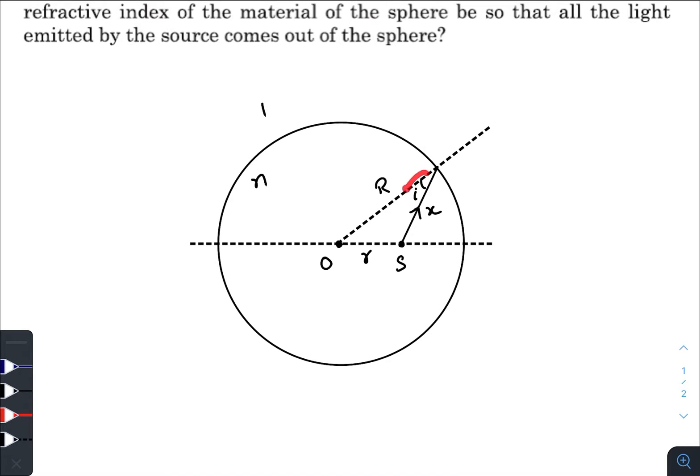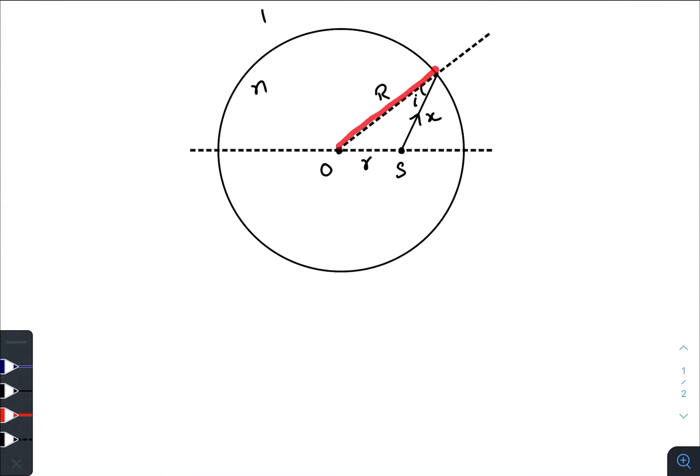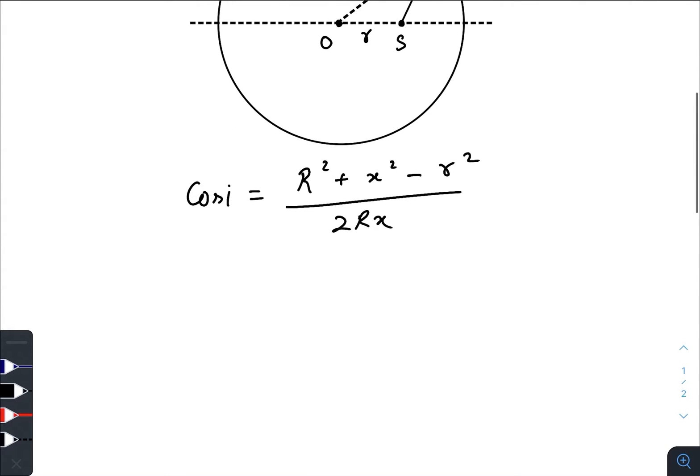Here this one is the angle of incidence i. If we consider this triangle, we can write cos i equals R² plus x² minus r² divided by 2Rx. So we have 2Rx cos i equals R² plus x² minus r².